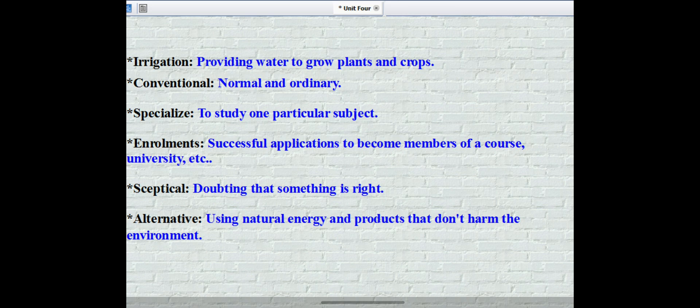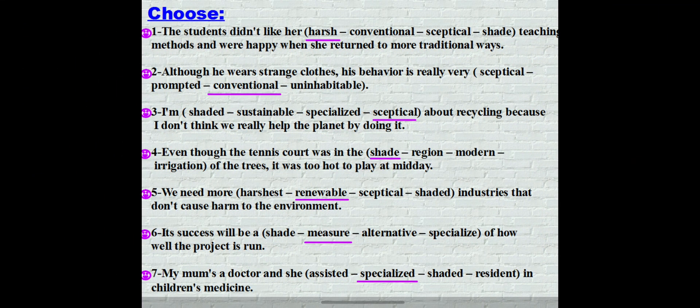Specialized: to study one particular subject. Enrollments: successful application to become members of a course or university. Skeptical: doubting that something is right. Alternative: using natural energy and products that don't harm the environment. Now let's practice.